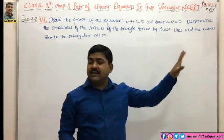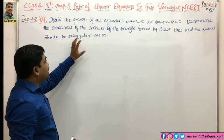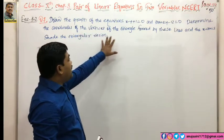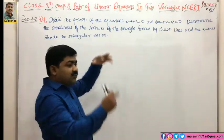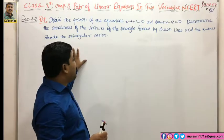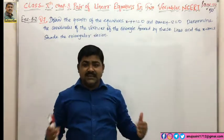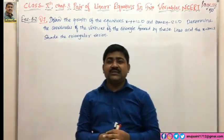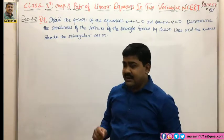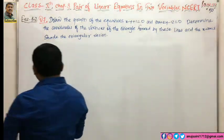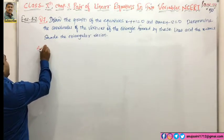सबसे पहले हमें एक graph पर plotting करना है, graph तैयार करना है। Graph तैयार करने से triangle के vertex मिलेंगे जो triangle form में होंगे, और इनके vertex को हमें लिखना है। इसके बाद जो triangular region आएगा उसको हमें draw करना है।